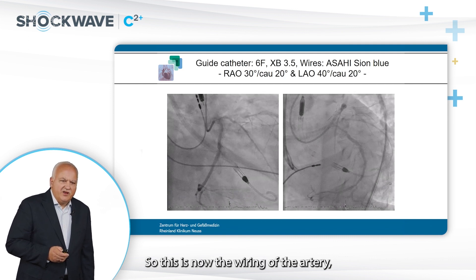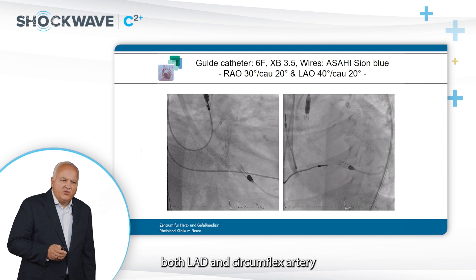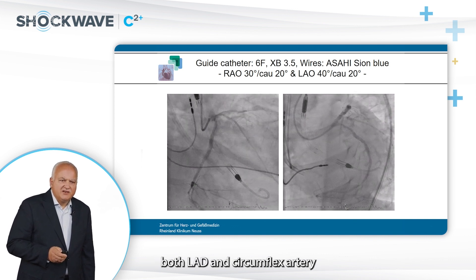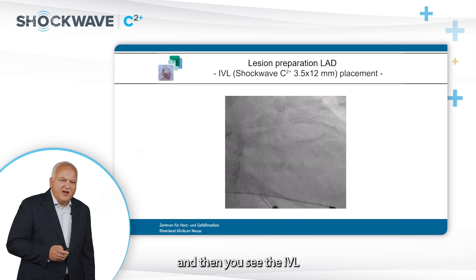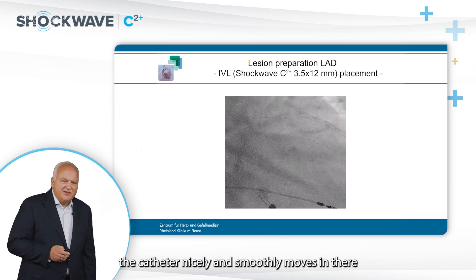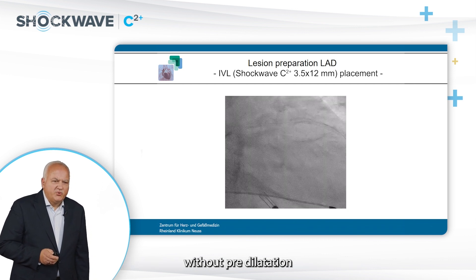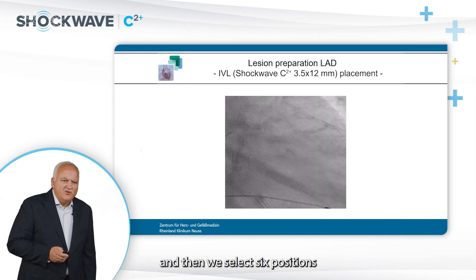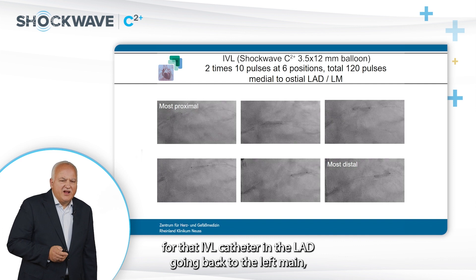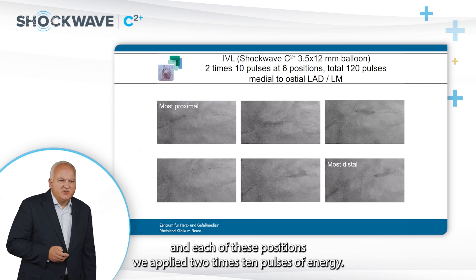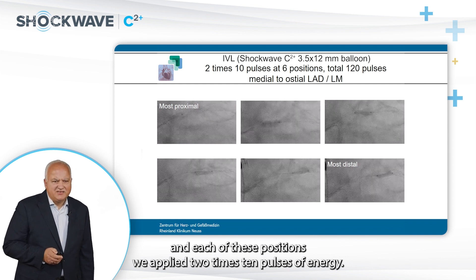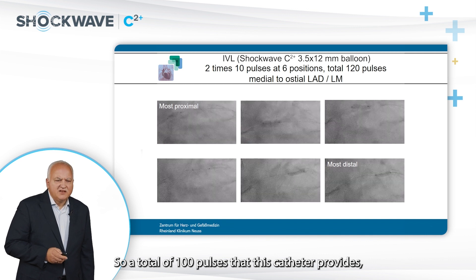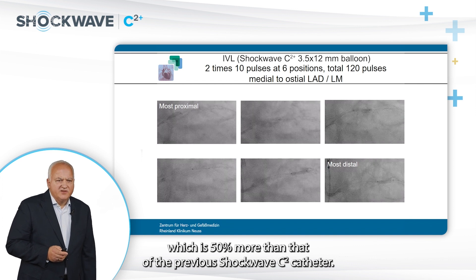This is now the wiring of both the LAD and circumflex artery, followed by IVL positioning into the LAD. The catheter smoothly moves in without predilatation, going to the most distal part. We select six positions for the IVL catheter in the LAD going back to the left main. At each position, we apply two times 10 pulses of energy — a total of 100 pulses, which is 50% more than the previous C2 catheter.